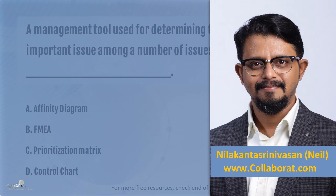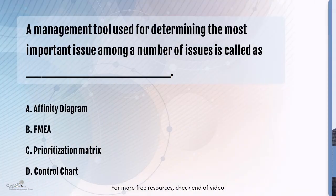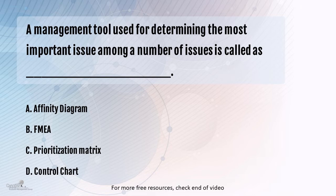Here's a very simple and straightforward question. A management tool used for determining the most important issue among a number of issues is called: Affinity Diagram, FMEA, Prioritization Matrix, or Control Chart. In order to answer this question, let's also use this as an opportunity to run past all the other tools that we have learnt.